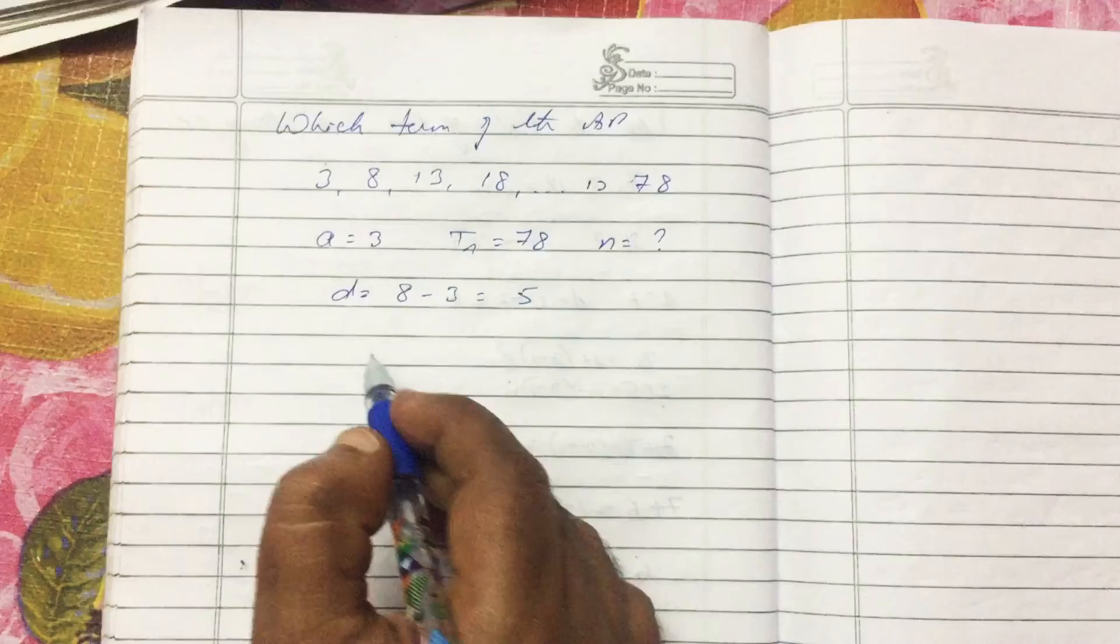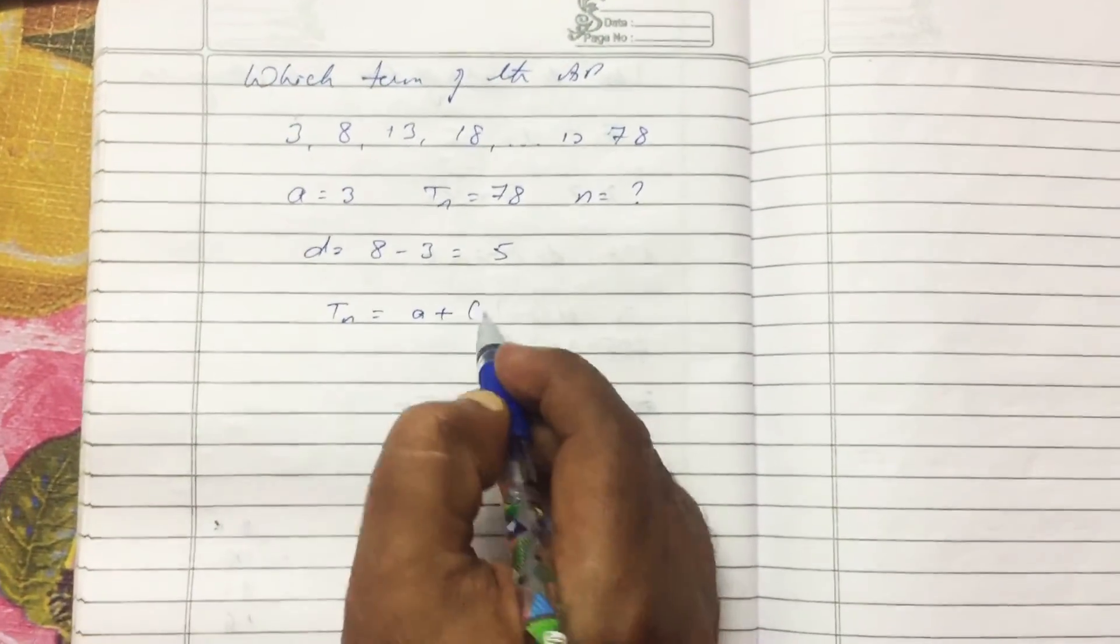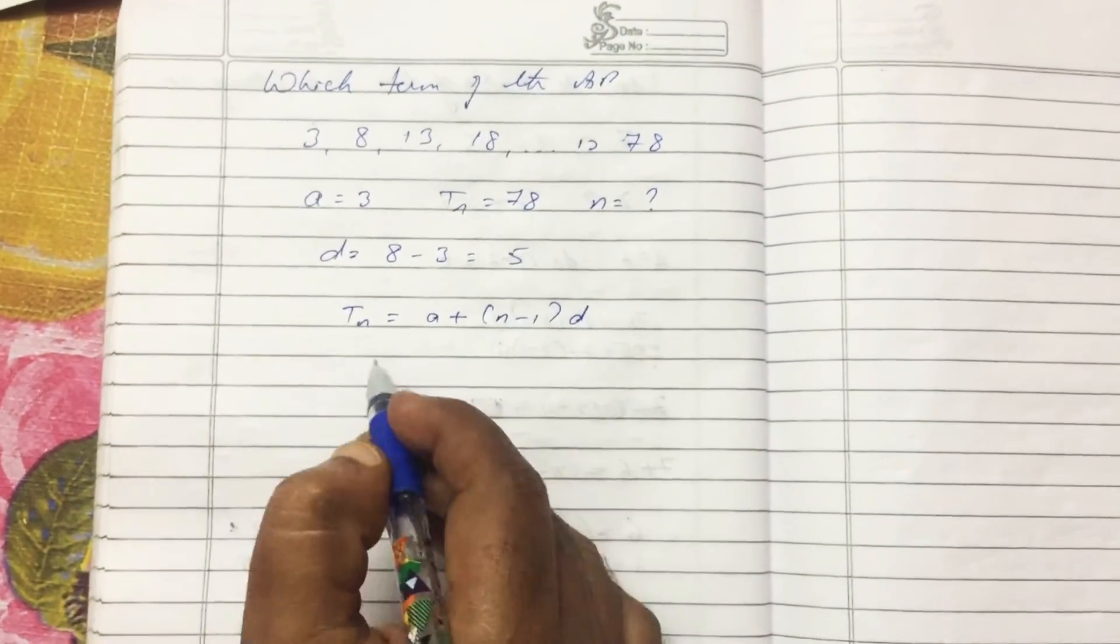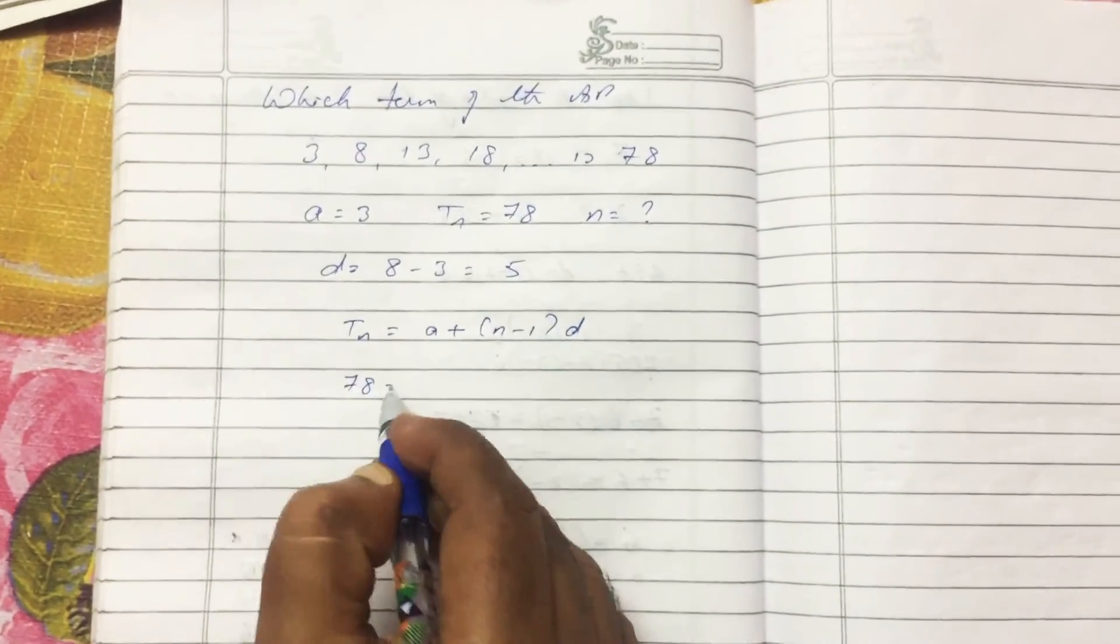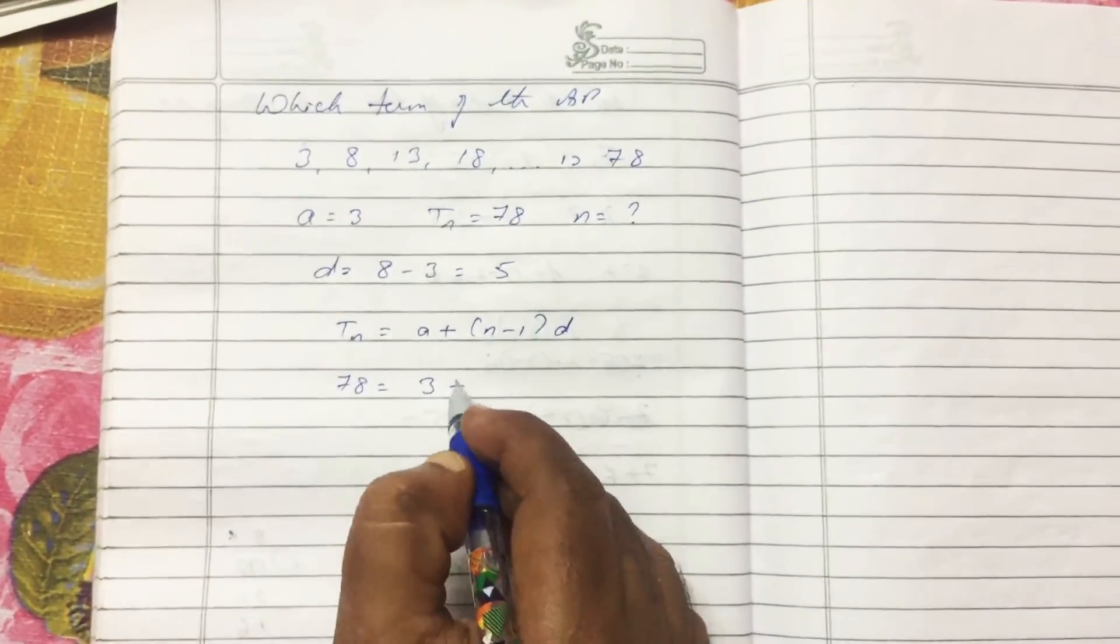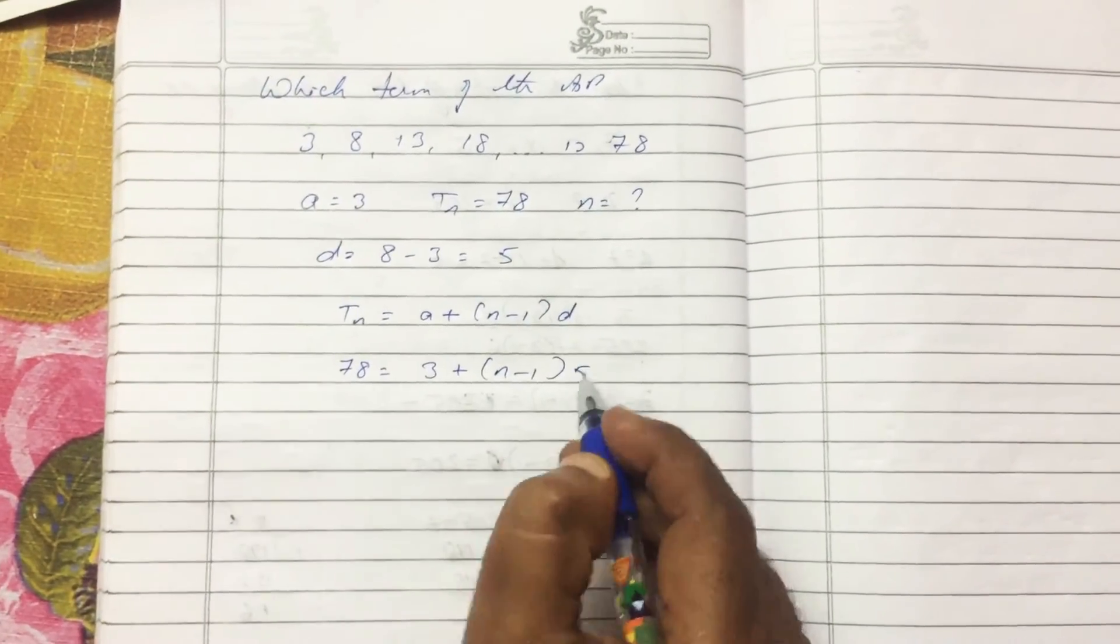Now I have to find TN, so I use the TN formula: TN equals A plus (N minus 1)D. TN is 78 equals 3 plus (N minus 1) times 5.